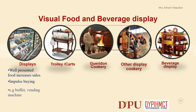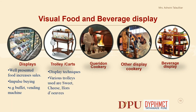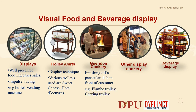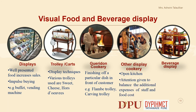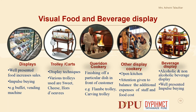Displays lead to impulse buying — for example, buffets and vending machines. Trolleys and Cards are used as display techniques; the various trolleys used in restaurants are Sweet Trolleys, Cheese Trolleys, Odof Trolleys, etc. Gueridon Cookery is the finishing of a particular dish in front of the customer — examples include Flambé Trolleys and Carving Trolleys. Other display cookery includes Open Kitchen, with attention given to balancing the additional expenses of staff and food cost. Beverage Display includes Alcoholic and Non-Alcoholic Beverage Display, and it should be well presented to create impulse buying.